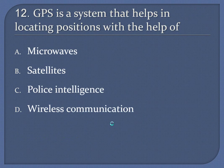Question 12: GPS is a system that helps in locating positions with the help of. A. Microwaves. B. Satellites. C. Police intelligence. D. Wireless communication. Answer: Satellites.